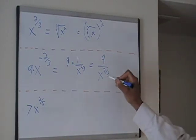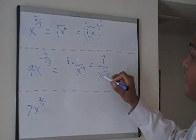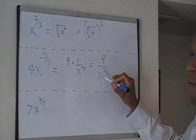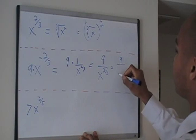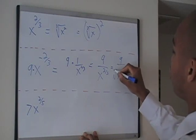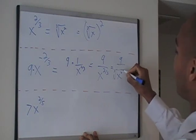Now, to finish up, we want to make this into radical form, the x to the 2/3. So we have 9 over x, and it's the cube root of x squared.